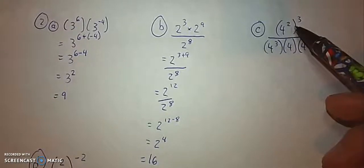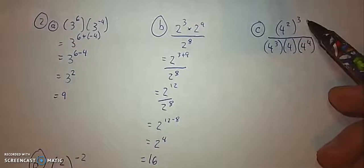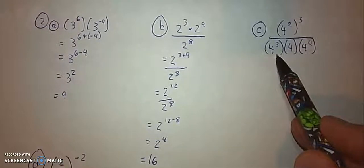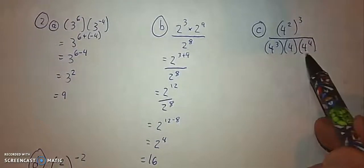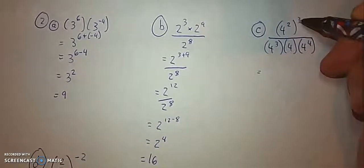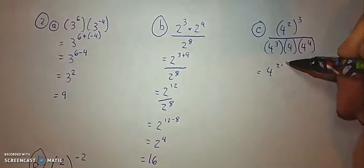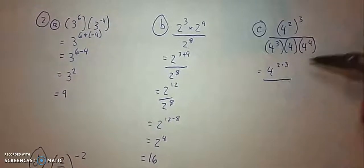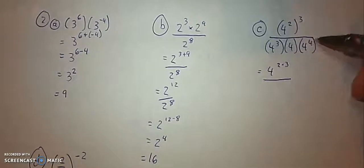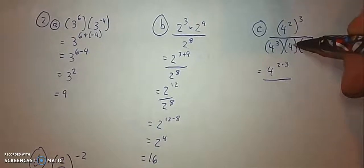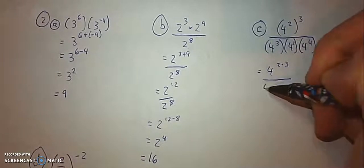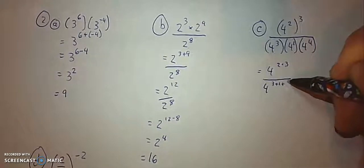For part C, we are going to apply the power to a power law for the numerator, and separately in the denominator, we are going to just work out this multiplication rule where we're going to add all these exponents. So in the numerator, we have power to a power, so that's going to be 4 to the power of 2 times 3. I'll simplify that in my next step. And then in the denominator, I have 4 to the power of 3 times 4 times 4 to the power of 4. This 4 by itself is actually to the power of 1, remember?